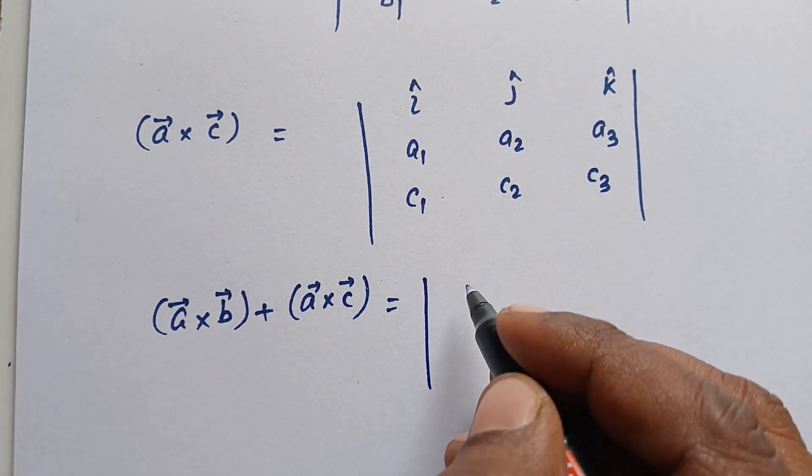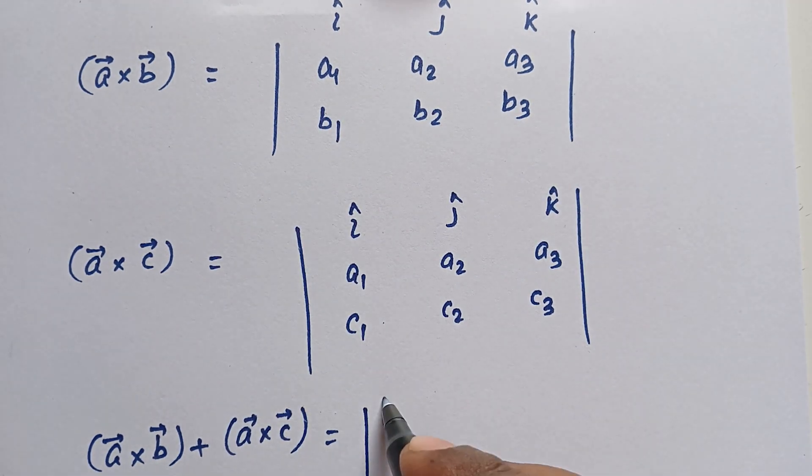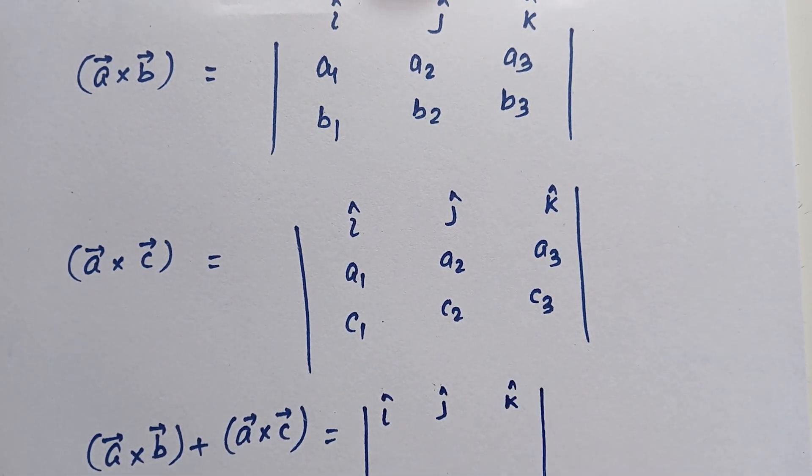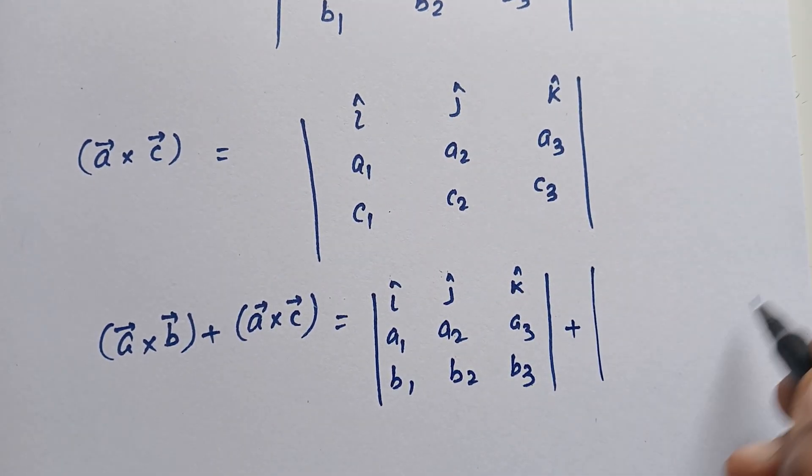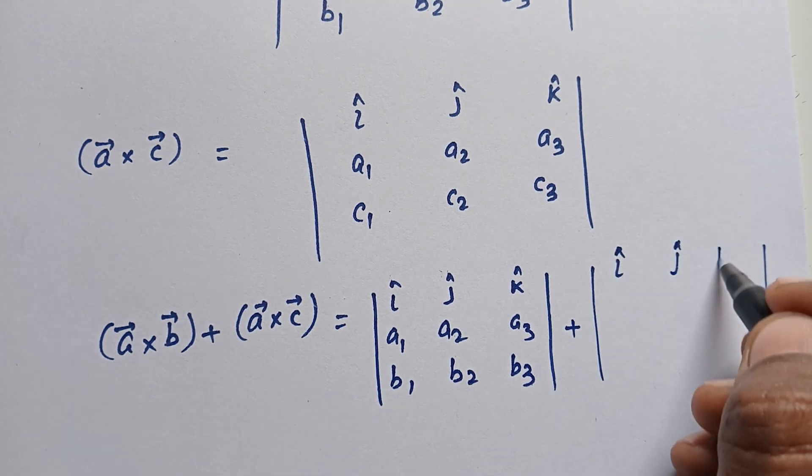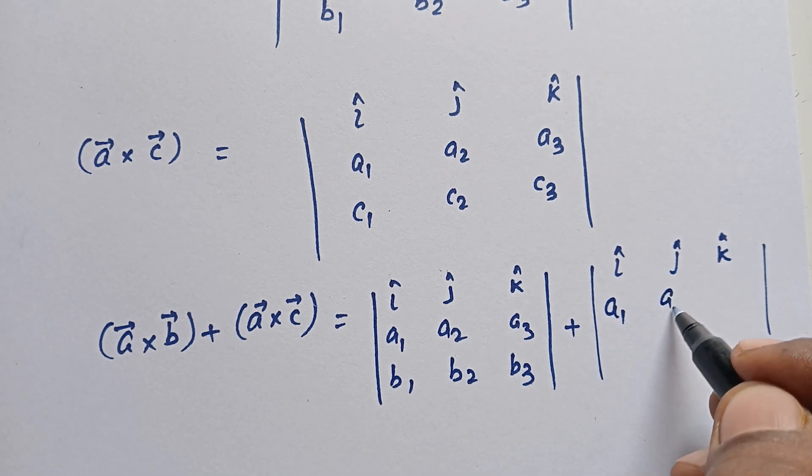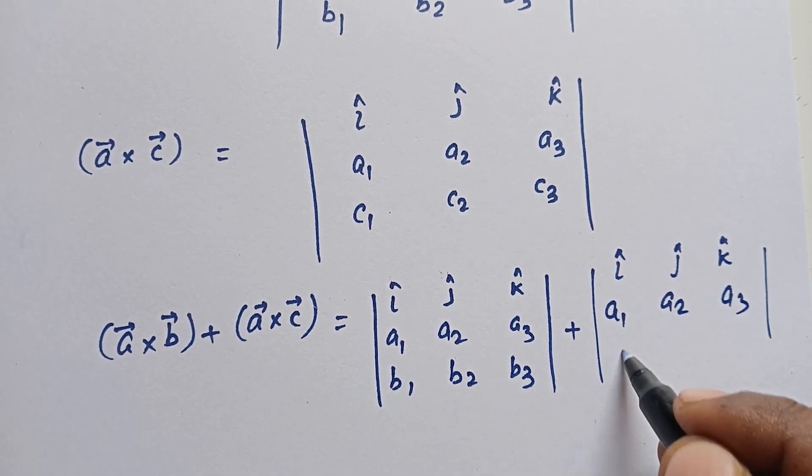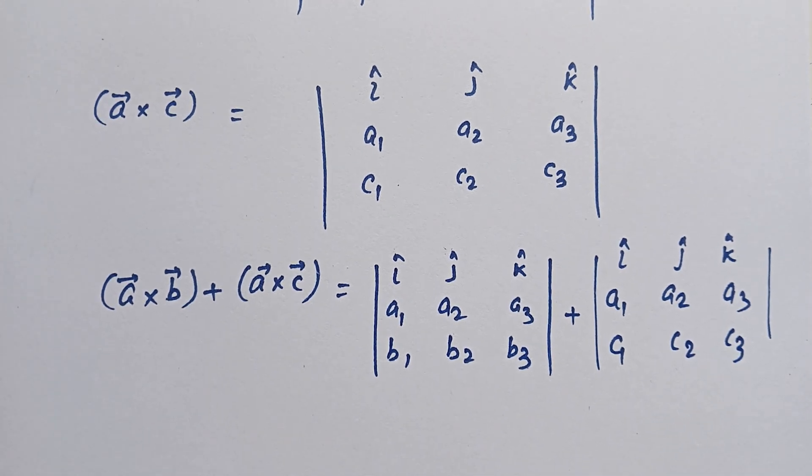Now A×B we write here: î, ĵ, k̂; a1, a2, a3; b1, b2, b3 plus î, ĵ, k̂; A×C gives a1, a2, a3; c1, c2, c3. Now see, both of them together, this is A×B and this is the LHS value. a1, a2, a3; b1, b2, b3 plus a1, a2, a3; c1, c2, c3. That's it, they are the same.